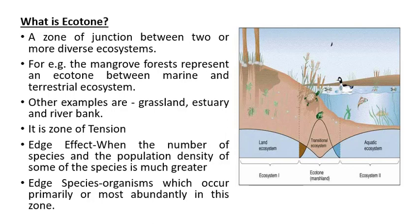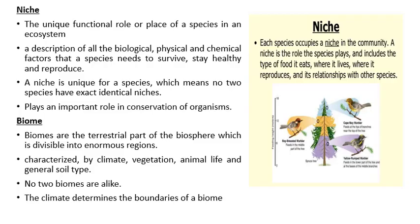What is edge effect? When the number of species and the population density of some of the species is much greater in the ecotone zone, it is known as an edge effect. Organisms which occur primarily or most abundantly in this ecotone zone are called edge species.